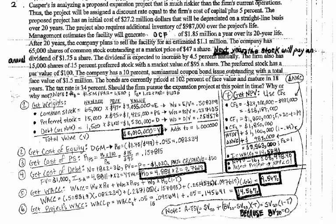You also have a little bit more information for your cash flow. The company is going to sell this facility for an estimated $1.1 million — that's your salvage value. Because your book value goes down to zero, your after-tax salvage value is just going to be that salvage value times one minus the tax rate. But first, let's take care of business and get the WACC.